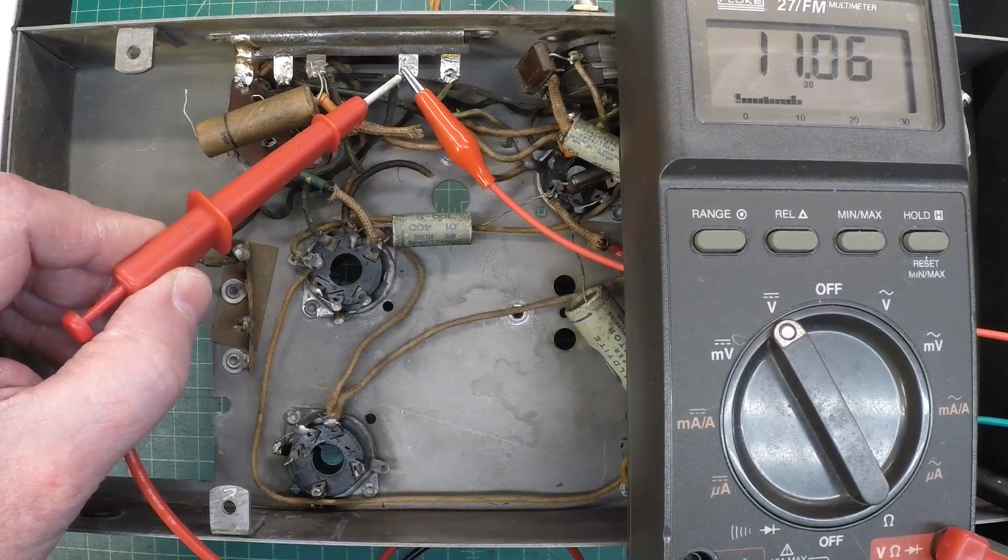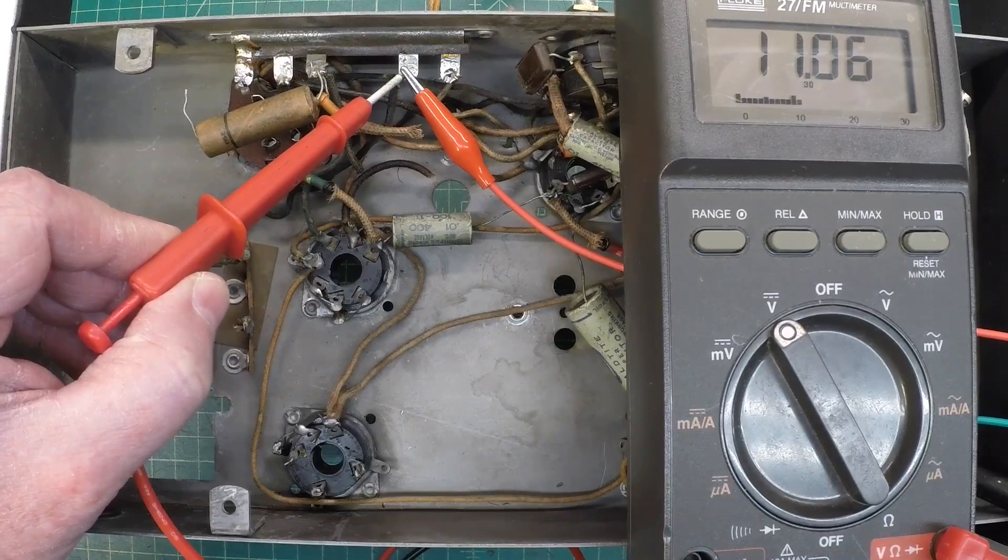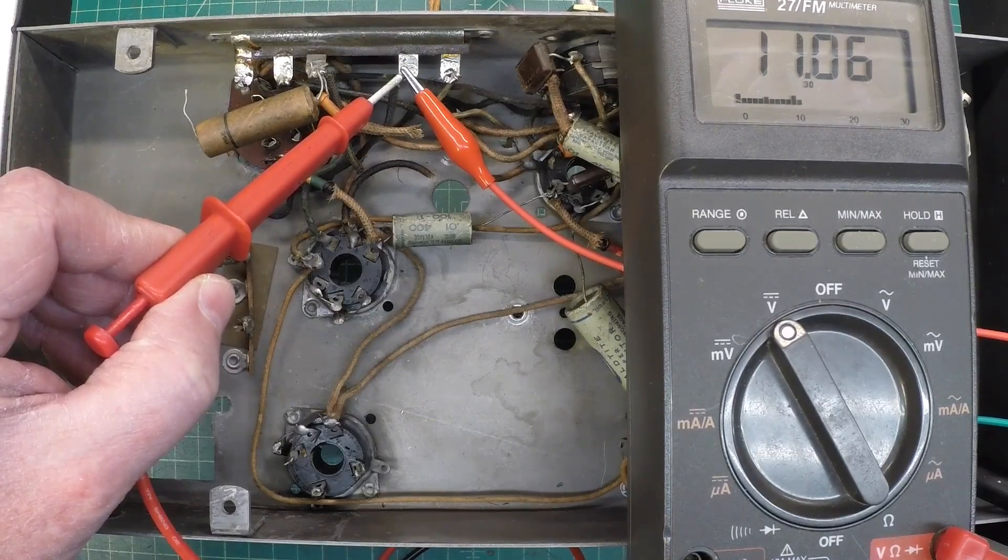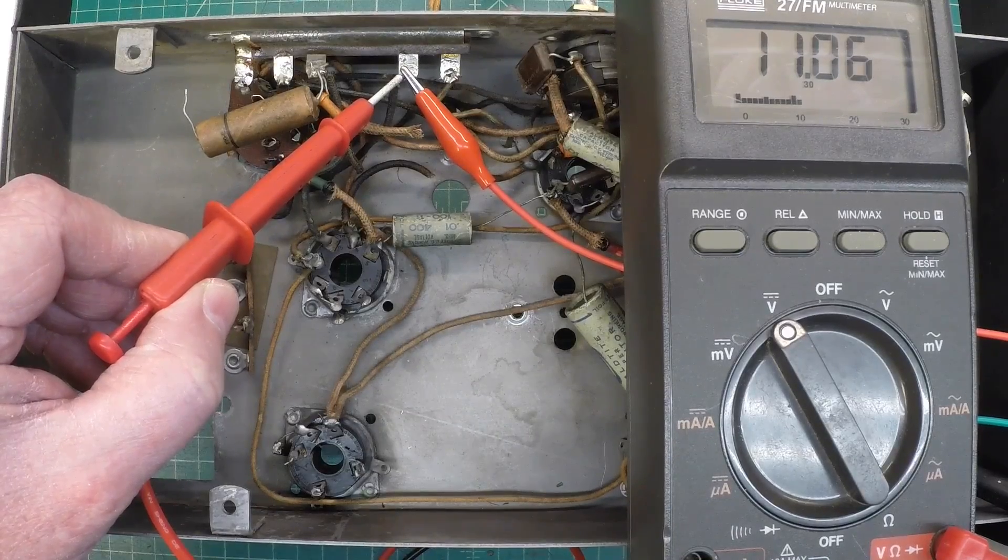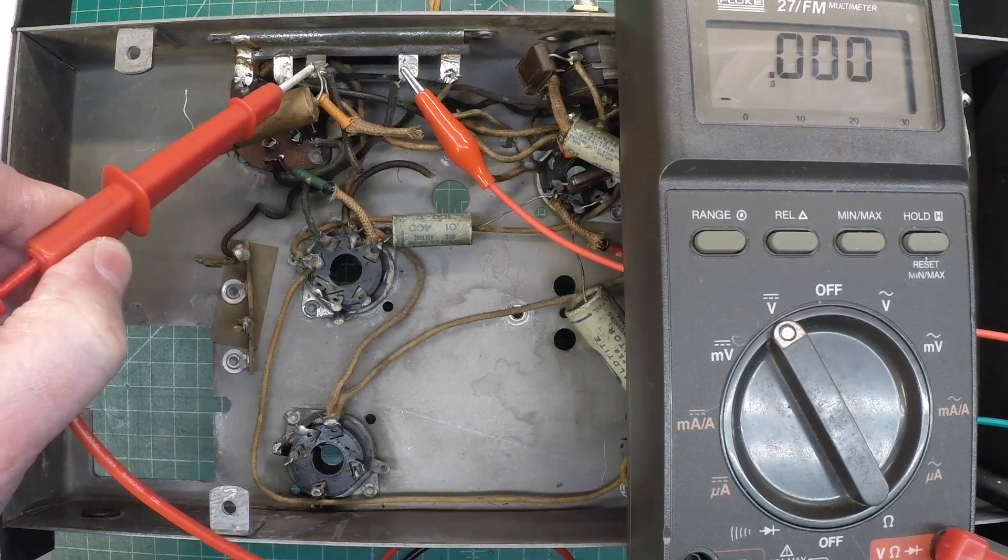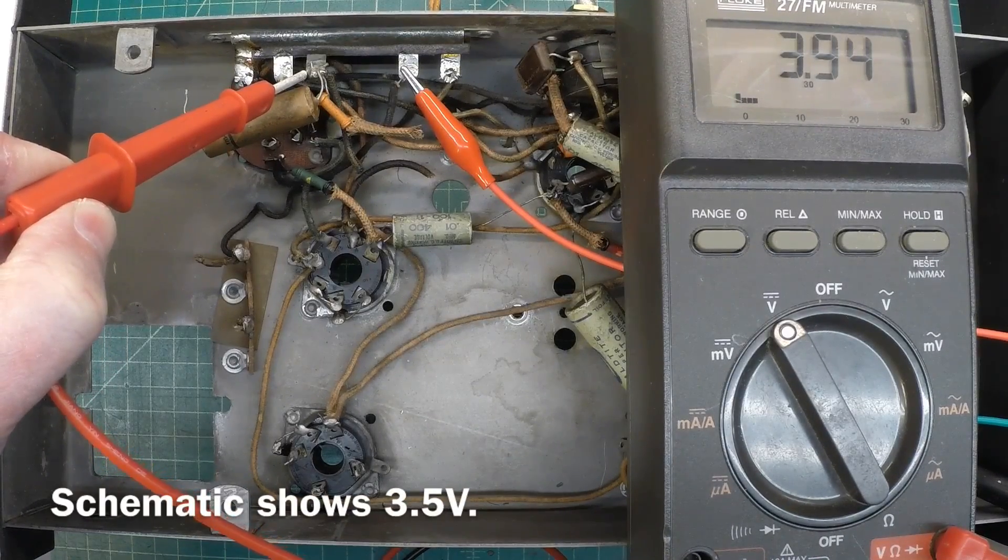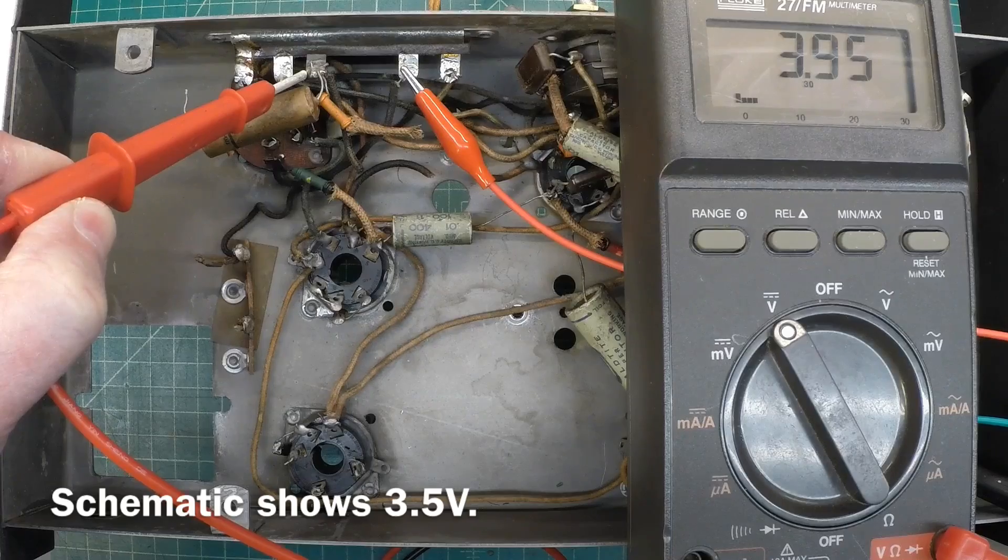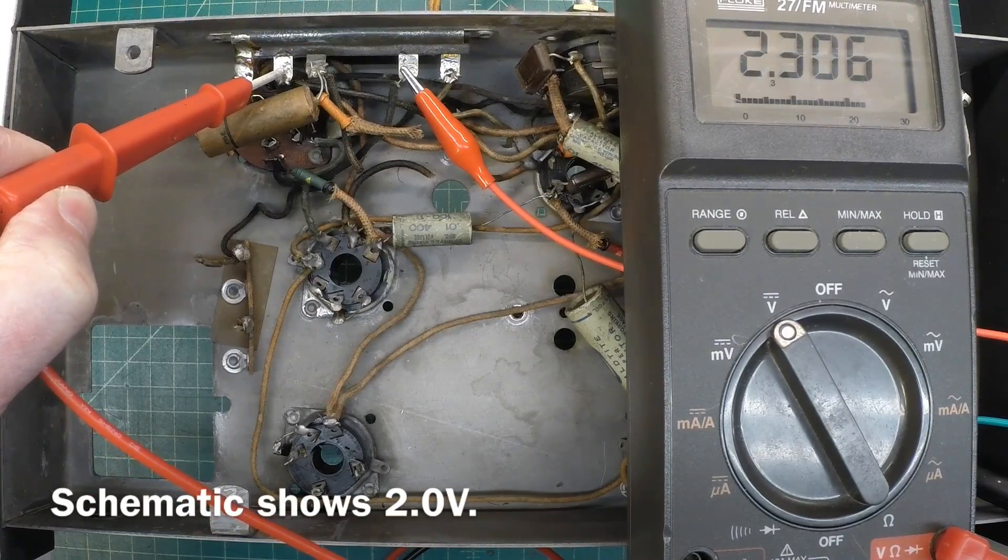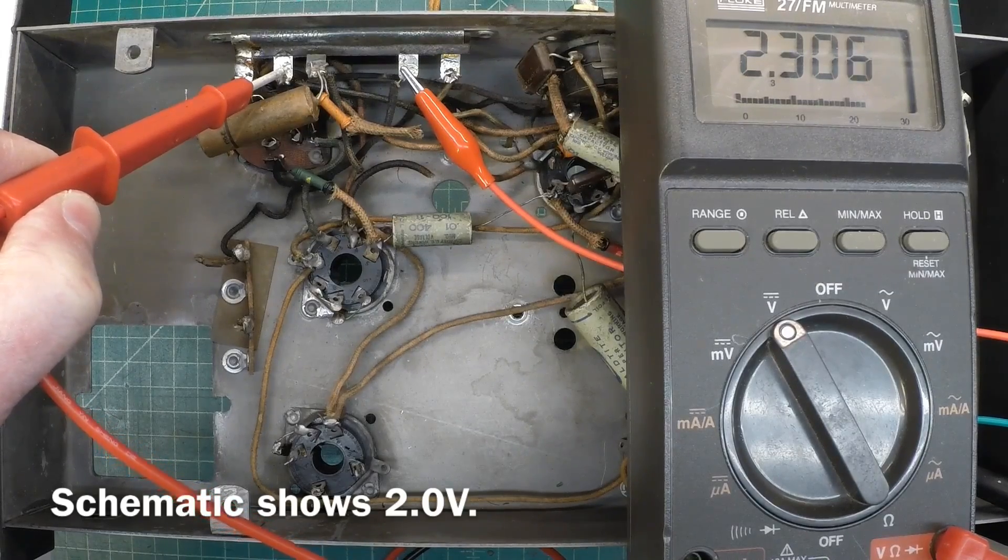You can see here we've got our 11 volts DC. This would be negative once it's in the circuit, but I'm just using a positive 11 volt source there. If we move over to this side here, we should see a voltage drop. We're at 3.94 and then an additional voltage drop here down to 2.3 volts.